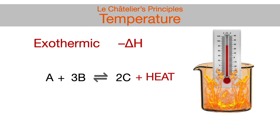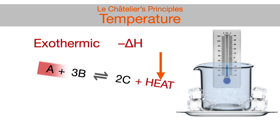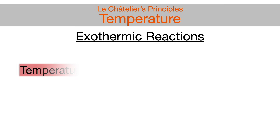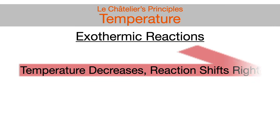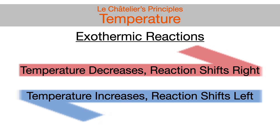But if heat is decreased by decreasing the surrounding temperature of the reaction environment, the reaction will shift to the right toward products, meaning the forward reaction will be favored and occur. Basically, decreasing the temperature is removing heat from the surroundings, increasing its capacity for more heat to be produced. So, for exothermic reactions, decreasing temperature will shift the reaction to the right, and increasing temperature will shift the reaction to the left.